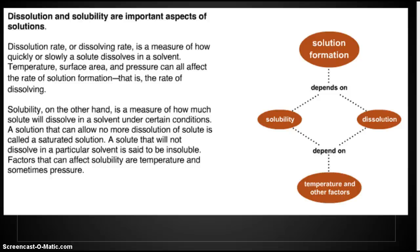Dissolution and solubility are important aspects of solution formation. Solution formation depends on solubility — how much — and on dissolution — how fast. How fast and how much something dissolves depends on temperature, surface area, whether you mix it by stirring, and whether the solute is soluble at all. Dissolution rate is a measure of how quickly or slowly a solute dissolves in a solvent. Temperature, surface area, and pressure can all affect the rate of solution formation. Solubility is a measure of how much solute will dissolve in a solvent under certain conditions. A saturated solution is one where no more solute can dissolve. A solute that will not dissolve in a particular solvent, like oil in water, is said to be insoluble. Factors that affect solubility are temperature and sometimes pressure, especially for gases.